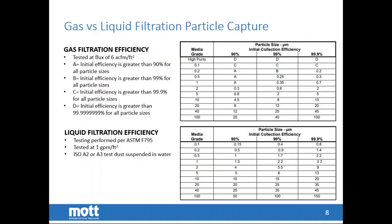This is a tabular representation of filtration efficiency performance shown by media grade. When we say media grade, that refers to the nominal pore size of the filter material. There is a very different efficiency rating between gas and liquid, and we'll get into the complexities of gas filtration on the next slides.